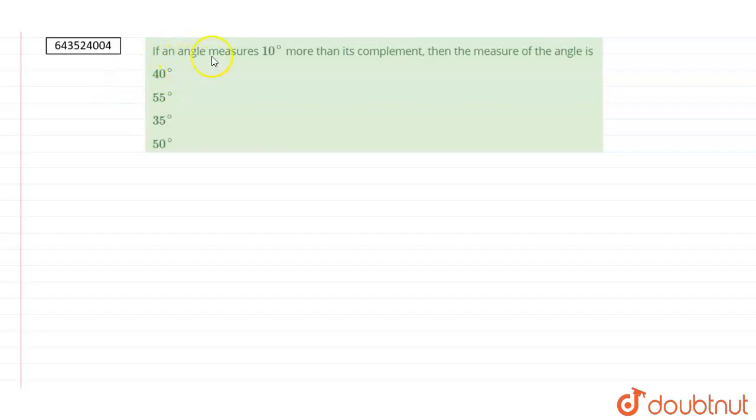The question is, if an angle measures 10 degrees more than its complement, then the measure of the angle is.